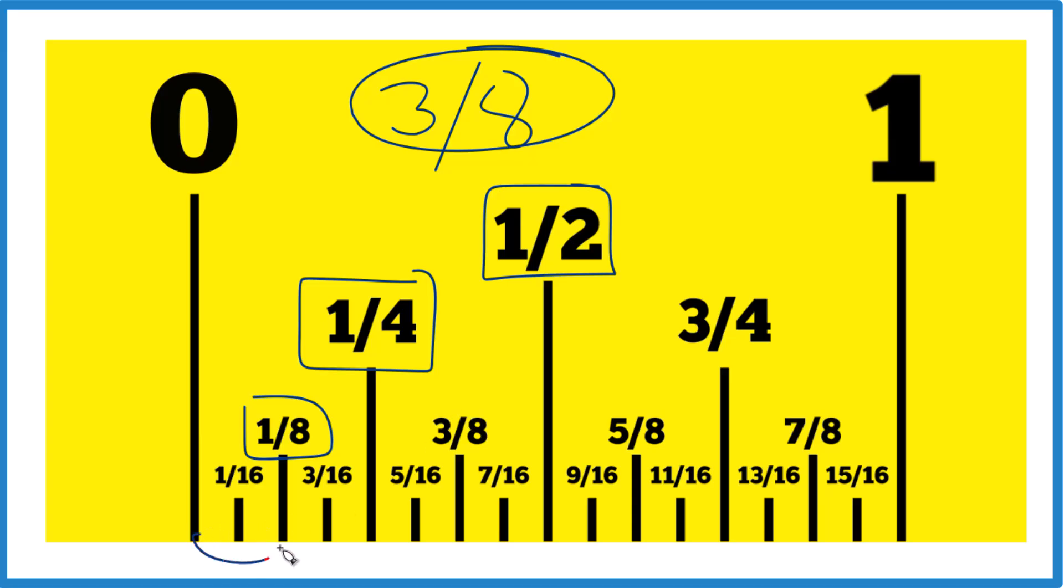So we're looking for three eighths. One eighth, two eighths, three eighths. Right here is the three eighths. So if you think of these blocks as one eighth, you can figure it out. Let's look at this on a blank ruler or tape measure.